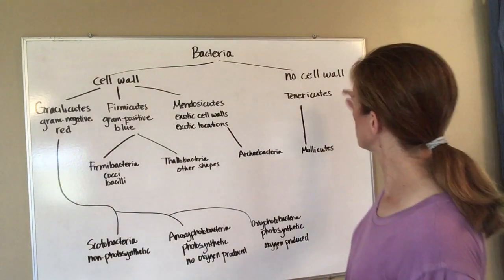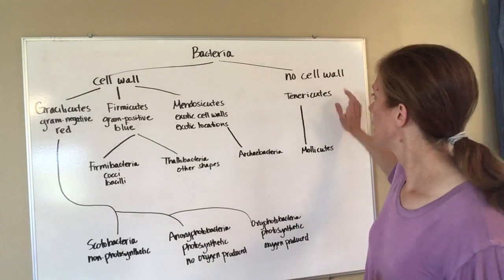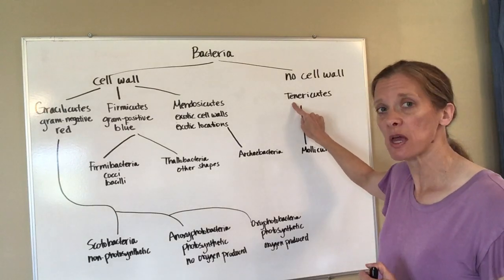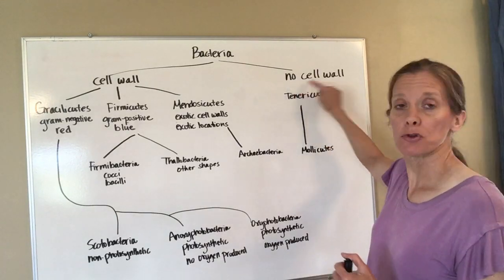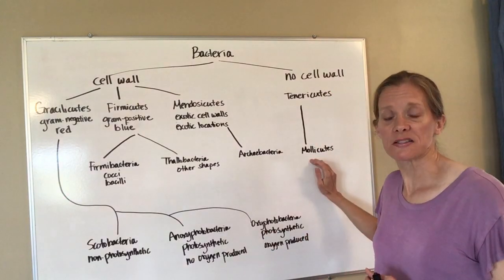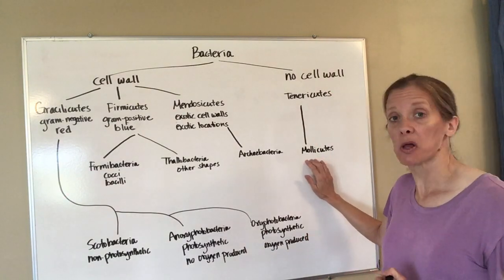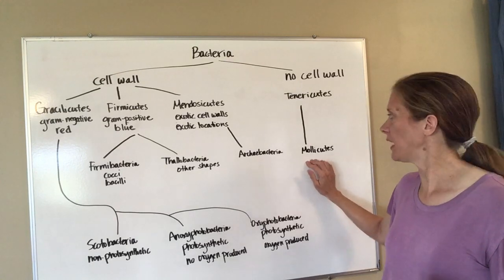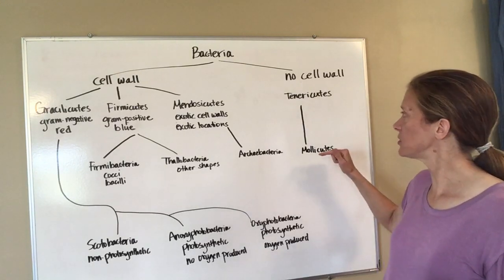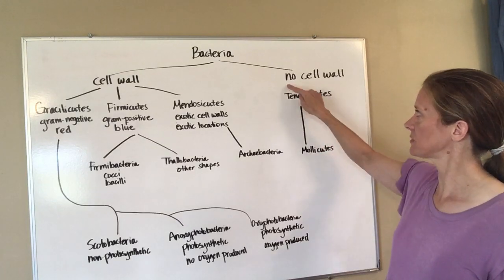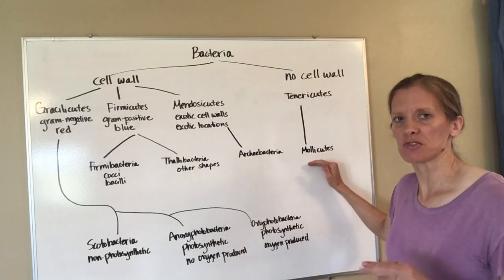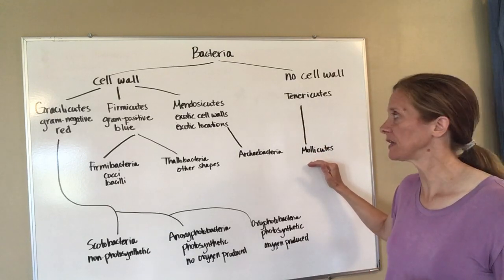We'll start with the easiest two first. Yesterday we talked about Tenericutes — how they have no cell wall, because if you have ten men there's you may as well have no wall at all. There's only one class that goes in Tenericutes and that's Mollicutes, so there's not a whole lot of memorization to do. Ten and Maul kind of sounds like 'no wall,' but it's the only one that goes there so there's not a whole lot to worry about remembering.